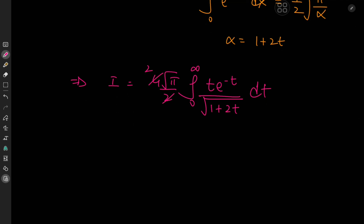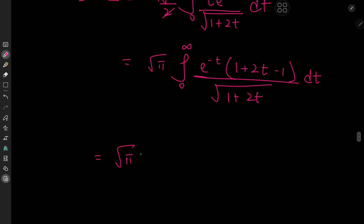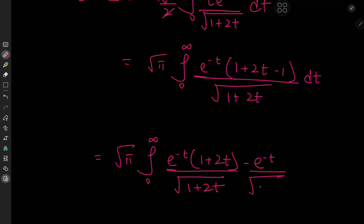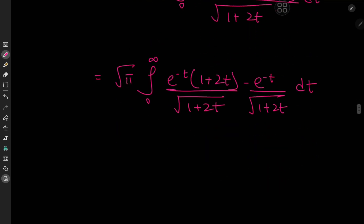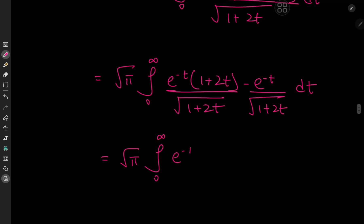So how do we solve this new integral? We need this factor of 2 inside the integrand, giving root pi times the integral from 0 to infinity of e to the negative t times 2t divided by root (1 plus 2t) dt. I'm going to add and subtract 1 — the reason being that we have root (1 plus 2t) in the denominator. So we can write this as root pi times the integral from 0 to infinity of e to the negative t times (1 plus 2t) minus e to the negative t, over root (1 plus 2t), dt. That gives root pi times the integral of e to the negative t times root (1 plus 2t), minus e to the negative t over root (1 plus 2t), dt.